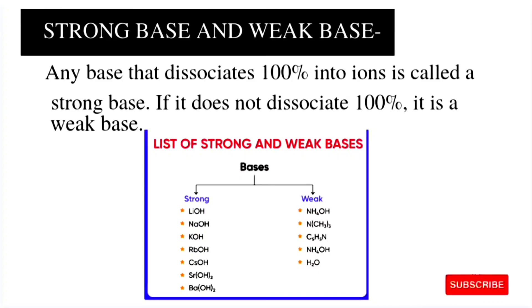Next is strong base and weak base. Any base that dissociates 100% into ions is called a strong base. And if it does not dissociate 100%, it is a weak base. So here you have strong and weak bases. You can learn them.